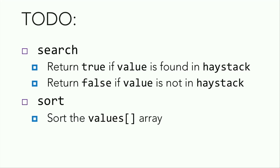So what are we doing? We're implementing two functions. Search, which returns true if a value is found in the haystack, returning false if the value is not in the haystack. And then we're also implementing sort, which sorts the array called values.